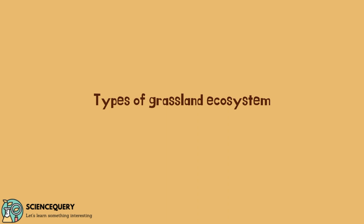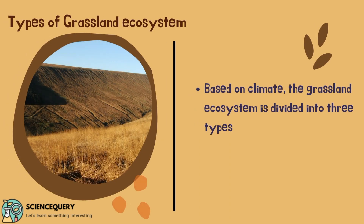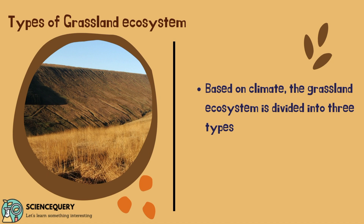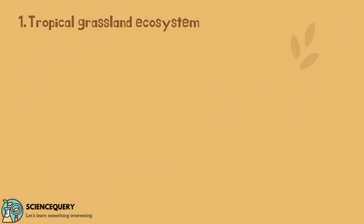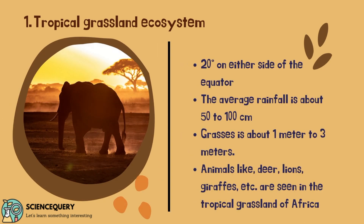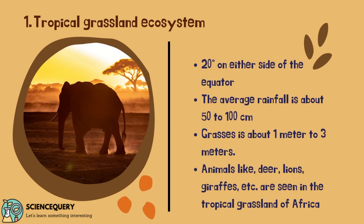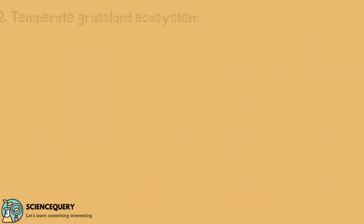Now let us see what are the types of grassland ecosystem. Based on climate, grassland ecosystems are divided into three types. The first type is the tropical grassland ecosystem. It is situated at 20 degrees either side of the equator. The average rainfall is about 50 to 100 cm and grasses grow about 1 meter to 3 meters tall. Animals like deer, lion, giraffe, etc. are seen in the tropical grasslands of Africa.